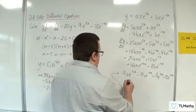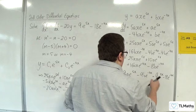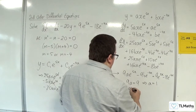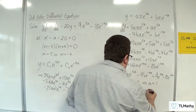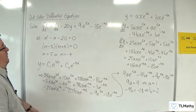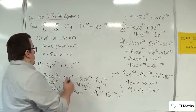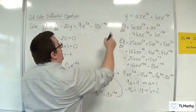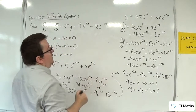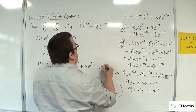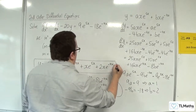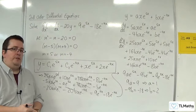Comparing coefficients: 9a = 9, so a = 1. And -9b = -18, so b = 2. So we now have the particular integral, and the general solution is y = c₁e^(5x) + c₂e^(-4x) + xe^(5x) + 2xe^(-4x).